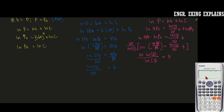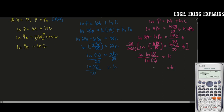So we have 20 ln 3 over ln 2, so that will be equal to 31.7, so our T is equal to 31.7 years.